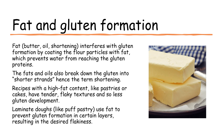Fat such as butter, oil, or shortening interferes with gluten formation by coating the flour particles with fat. This prevents water from reaching the gluten proteins. The fats and oils also break down the gluten into shorter strands, hence the term shortening. Recipes with a high fat content, like pastries or cakes, have tender flaky textures and so less gluten development.